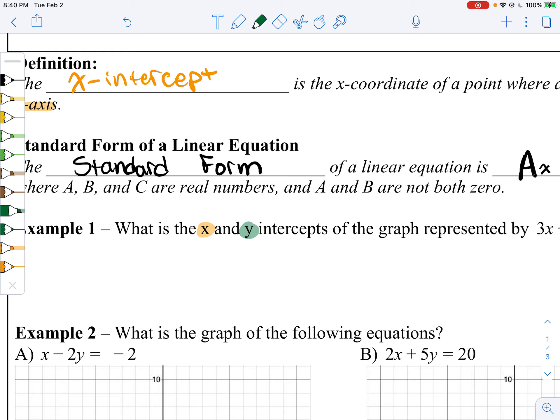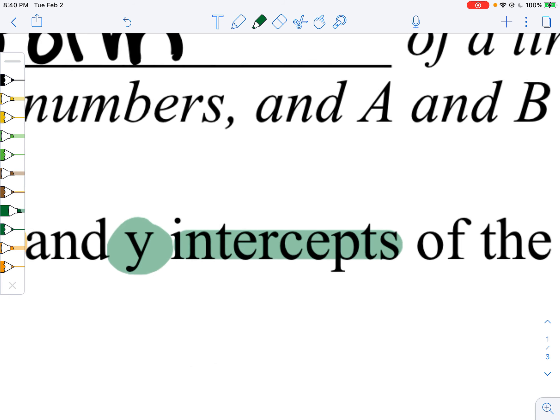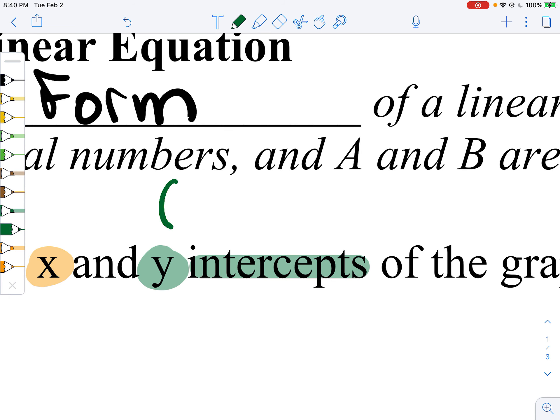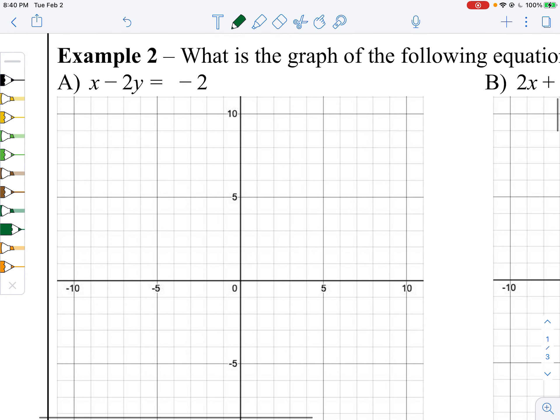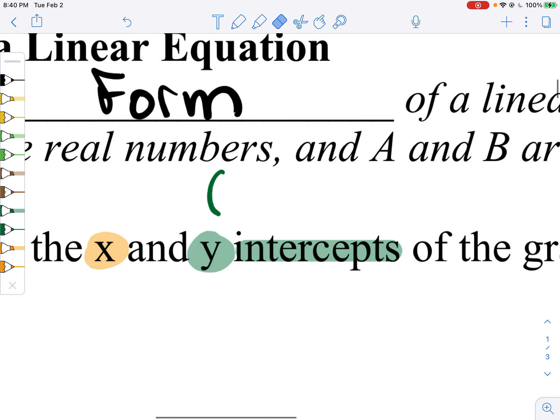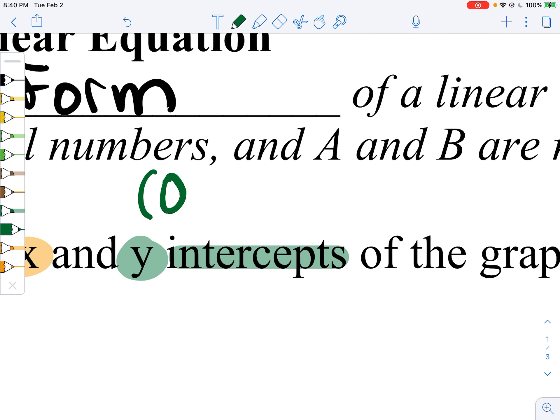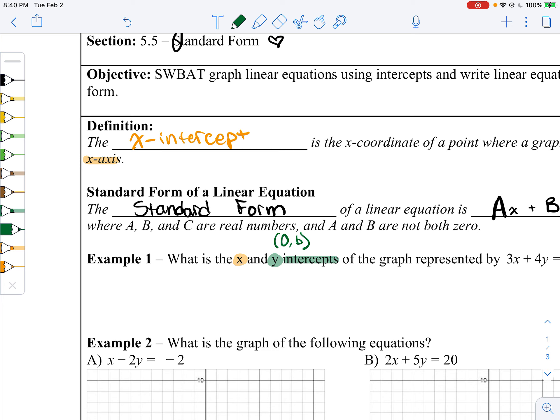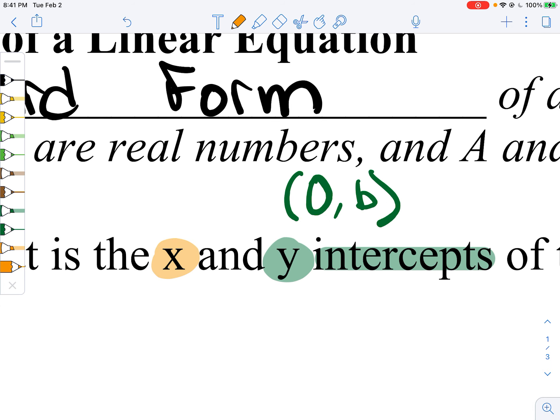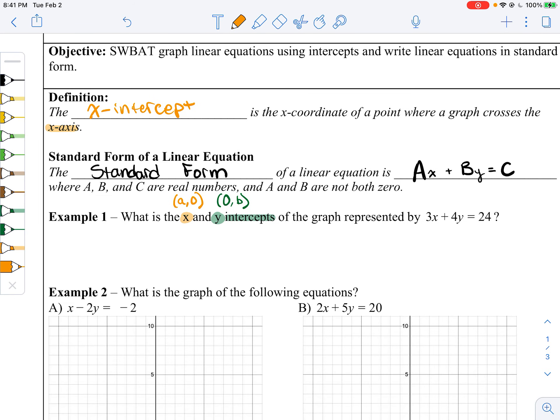Remember that a y-intercept, when we use like y equals mx plus b for example, that's always on the y-axis. If I have a graph, the y-axis is this guy right here. Our intercept is always going to be on the y-axis. Now, the y-axis is whenever x equals 0. But then the x-intercept is going to be the exact opposite of that. It'll be some number, but there's no y, so it'll be at 0.